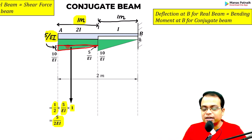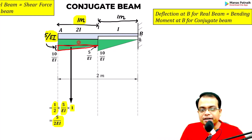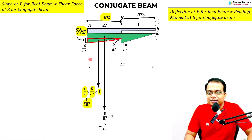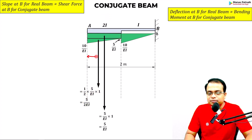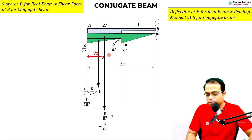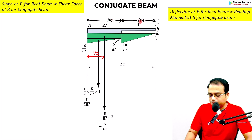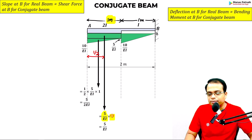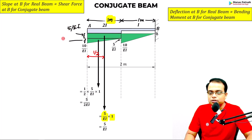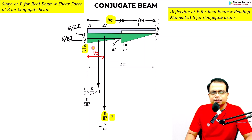For the rectangular portion, the point load acts at the center. Base is 1 meter, height is 5/EI, so the force is 5/EI. Adding both the rectangular and remaining triangular contributions gives a total of 10/EI for that combined region.